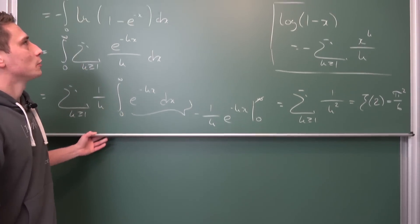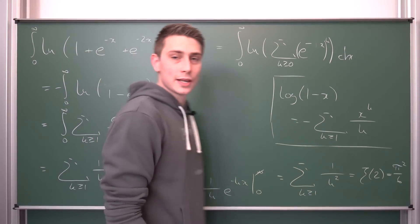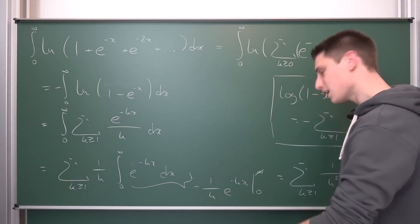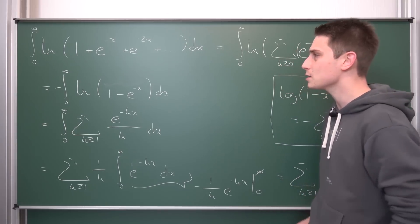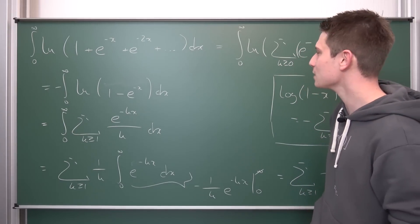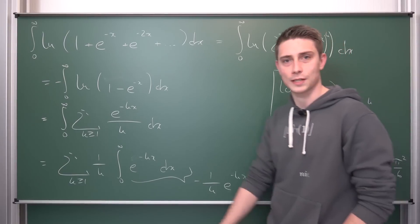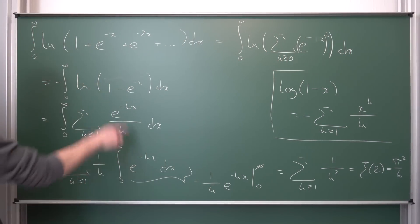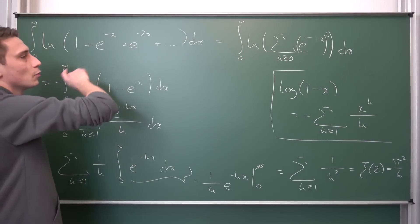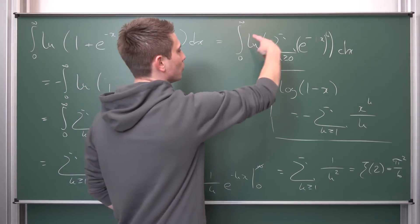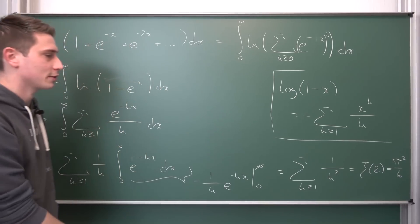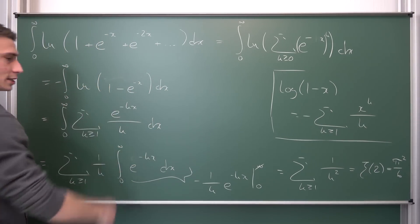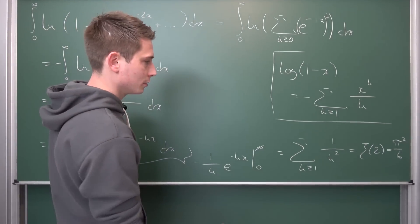And zeta of 2 is nothing other than pi squared over 6. I hope this is correct — he said it's going to be a nice answer and I think this is pretty nice. This concludes the improvised session. I'm going to check with Wolfram Alpha — I can probably put it in in this form and it should spit something out. Maybe there's also a Wikipedia article on this integral; maybe it's a representation of the Basel problem.